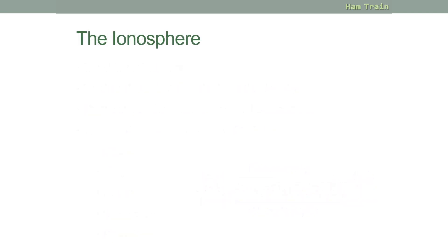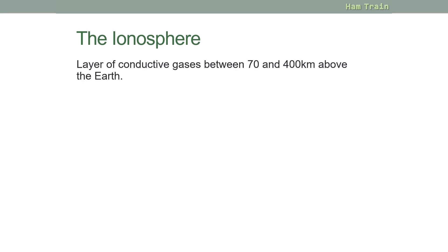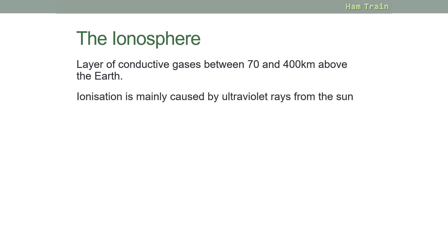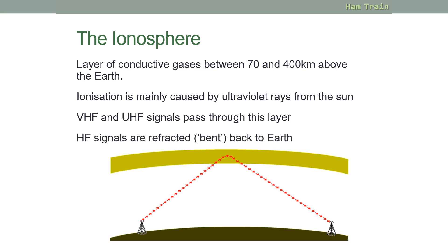Let's take a look at the ionosphere. This is a layer of conductive gases that are between 70 and 400 kilometres above the earth. Ionization of the ionosphere is mainly caused by ultraviolet rays from the sun. VHF and UHF signals pass through this layer, whereas HF signals are refracted or bent back down to earth by the ionosphere.